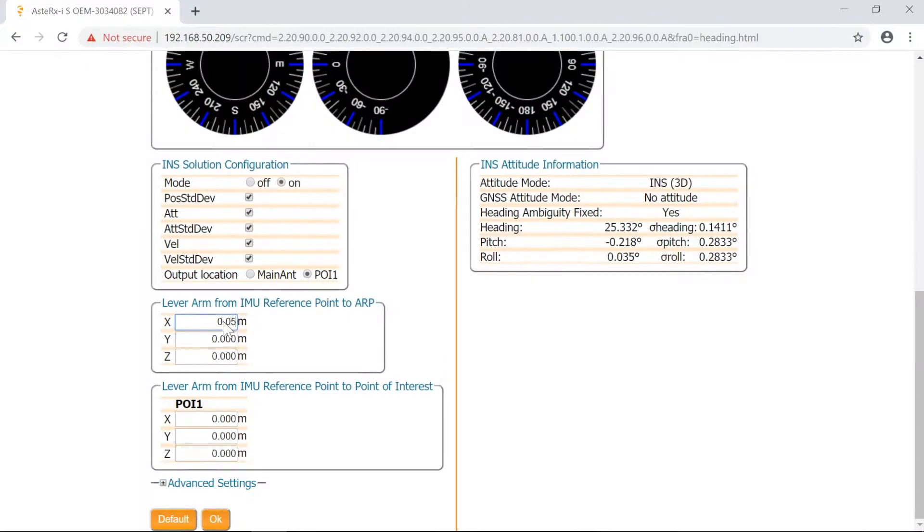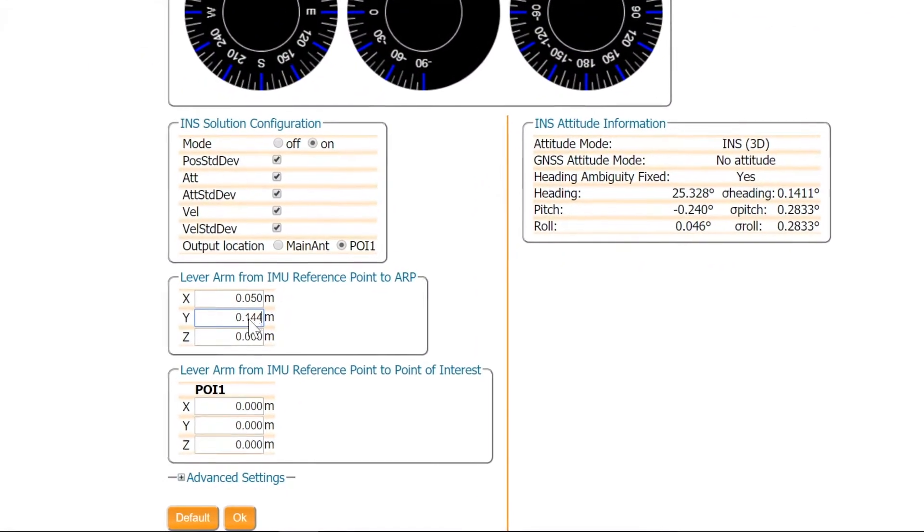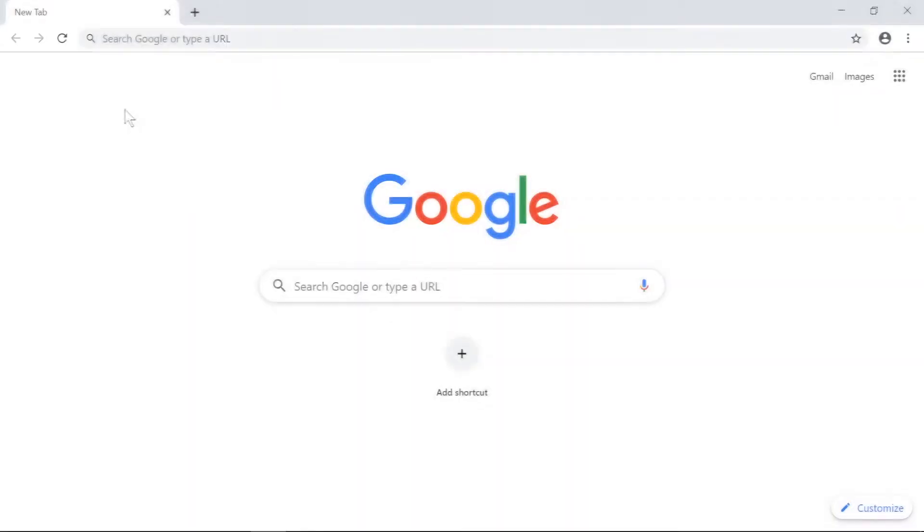In order to obtain the desired position accuracy, the lever arm should be provided with millimeter accuracy. Now let me show you how to do this.